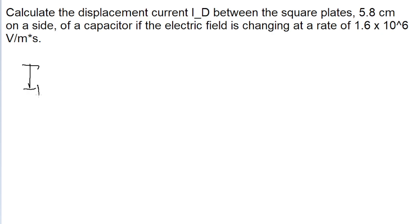The displacement current, I_d, is equal to the electric constant epsilon naught multiplied by the rate of change of the electric flux between the plates.